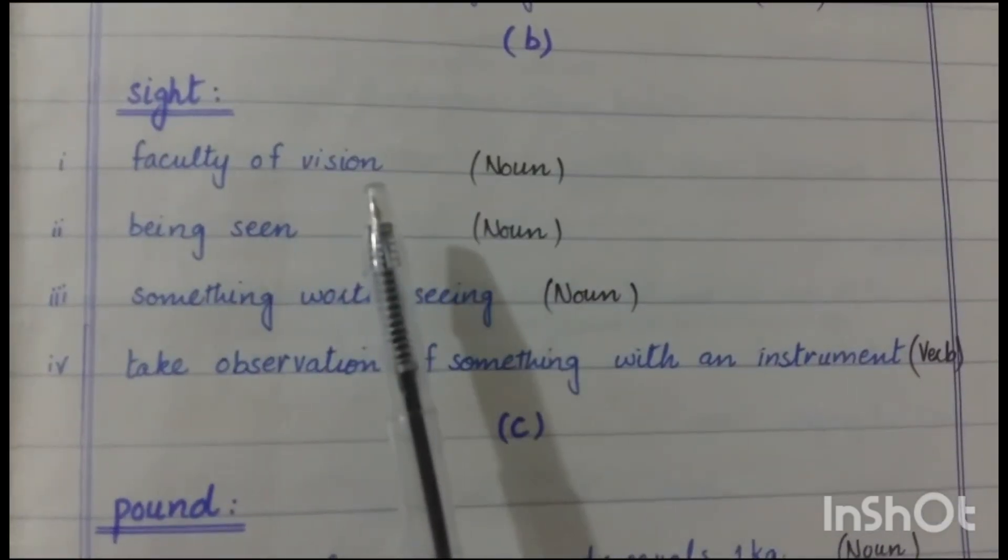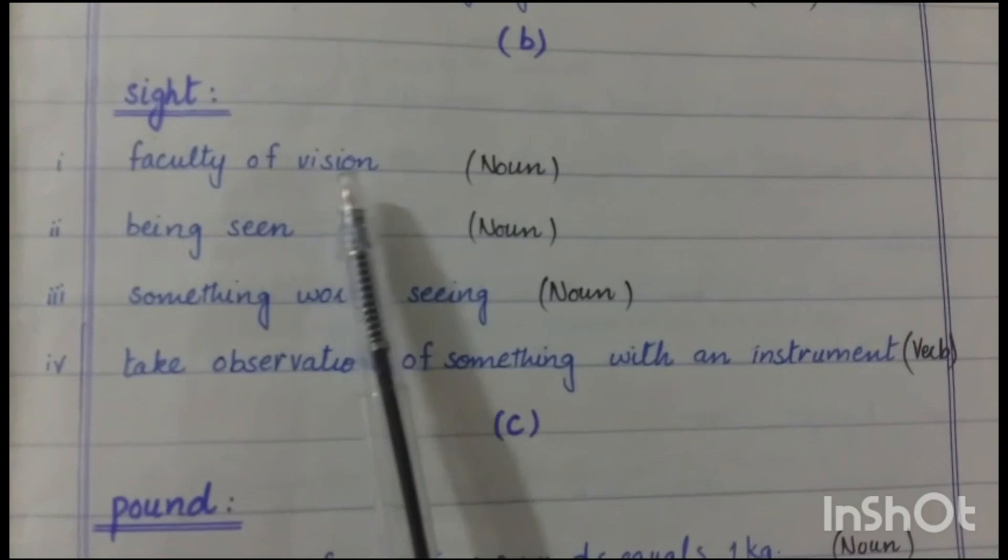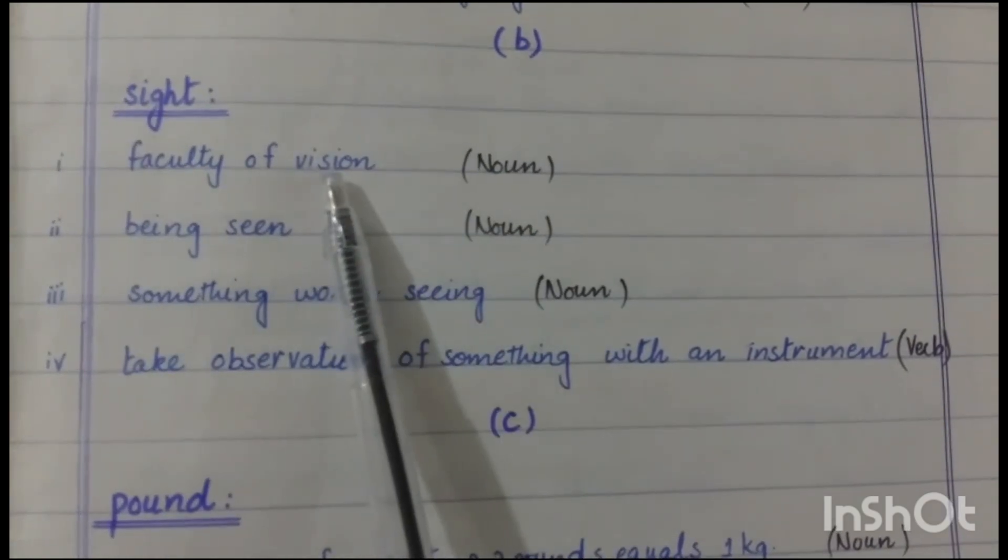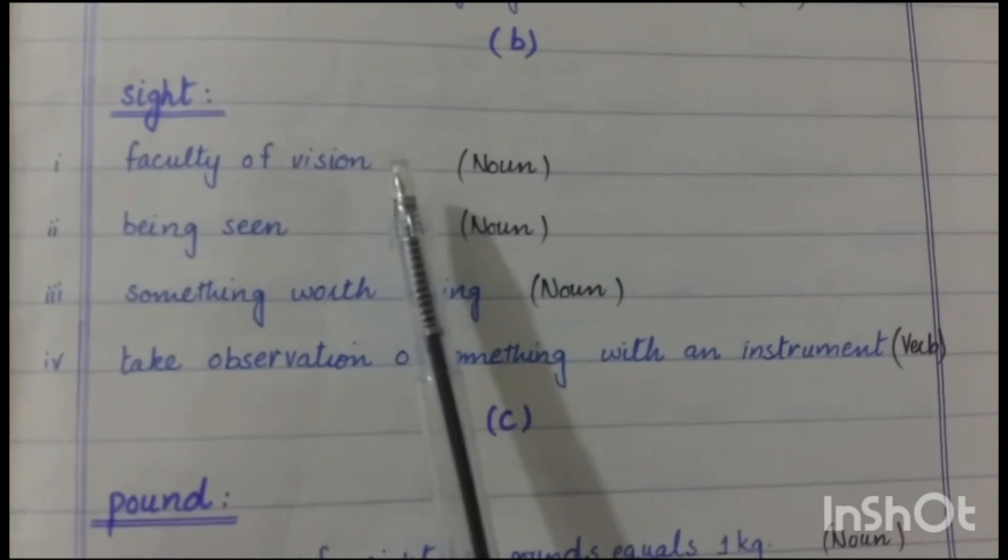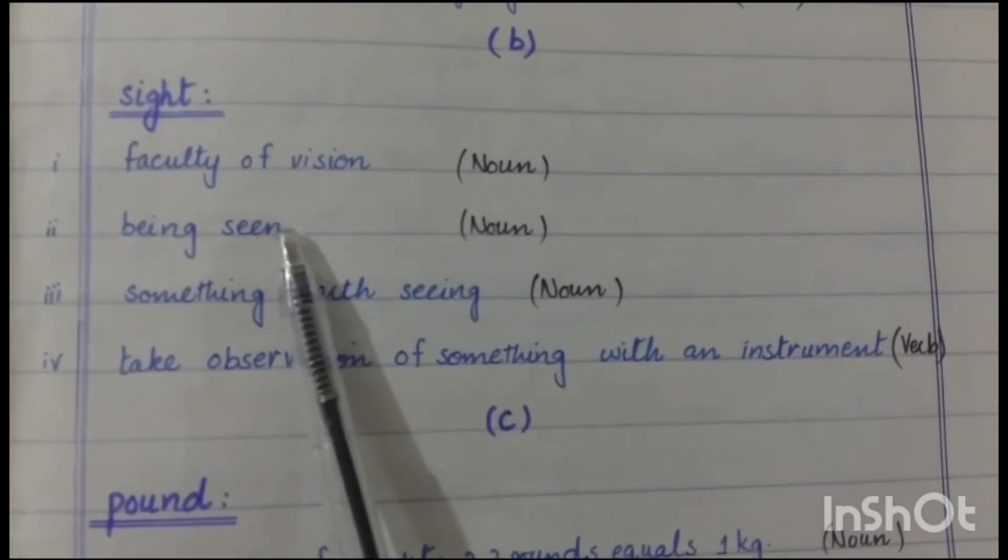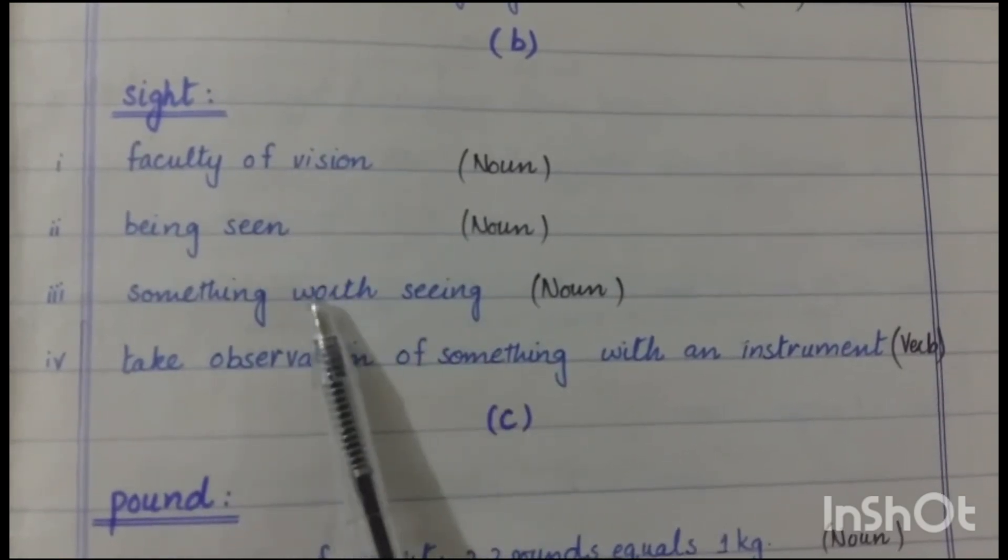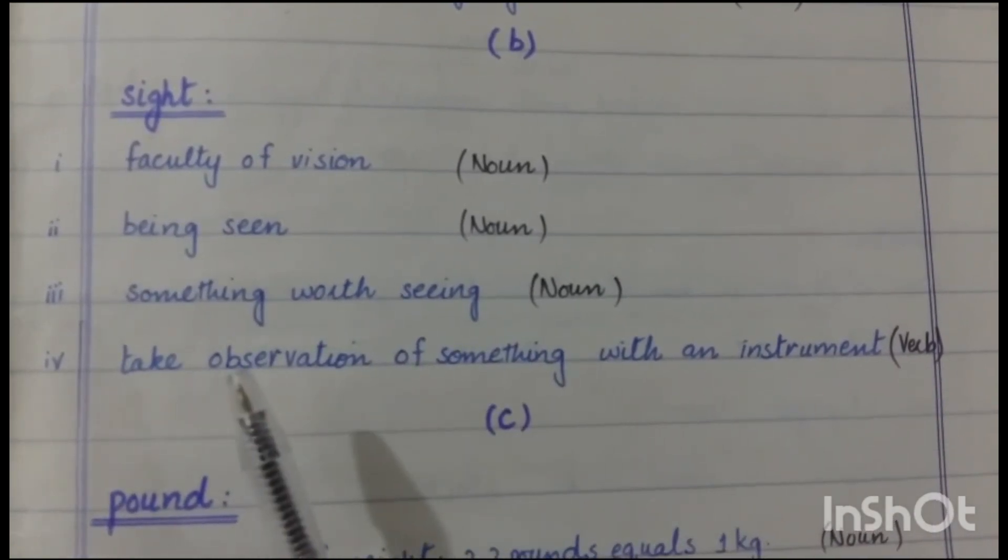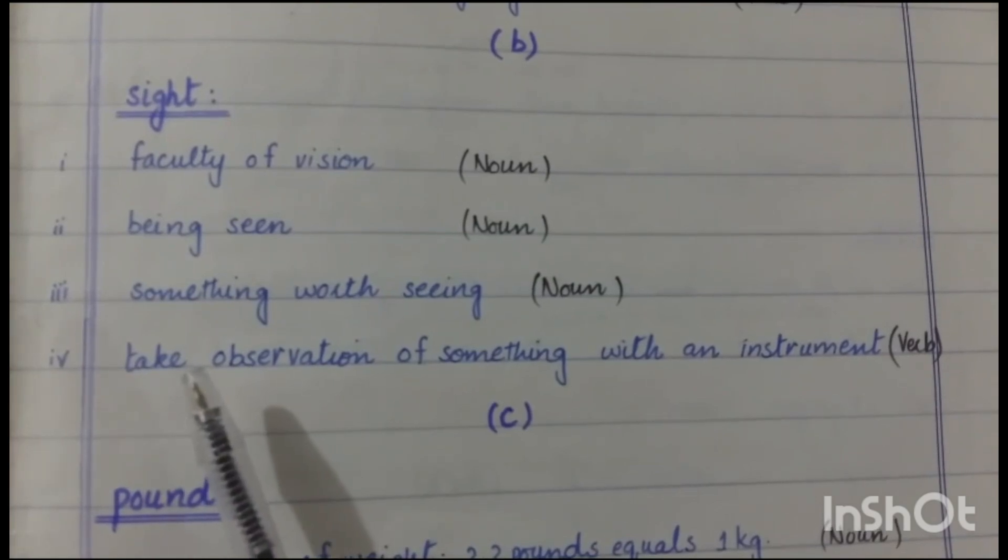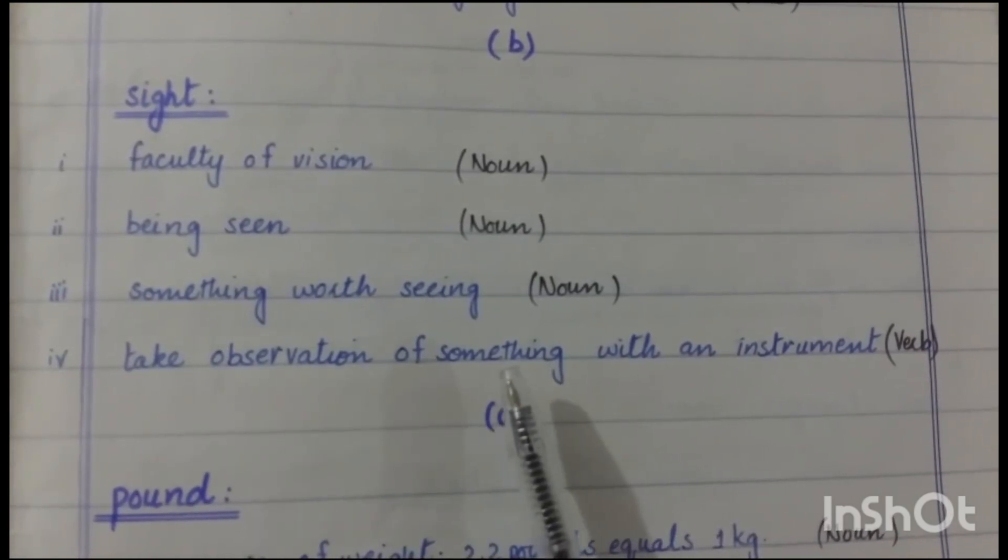The second word is sight. Sight as a noun means faculty of vision, it means the ability to see, being seen, something worth seeing. Sight as a verb means to take observation of something with an instrument.